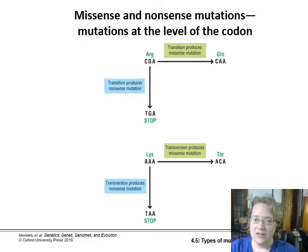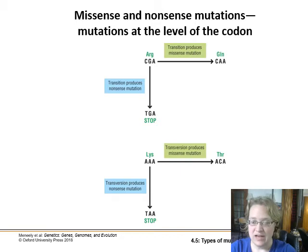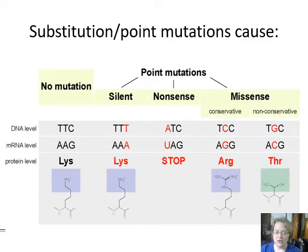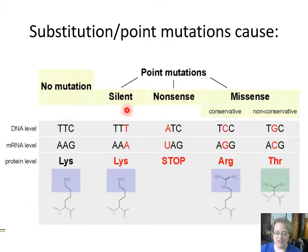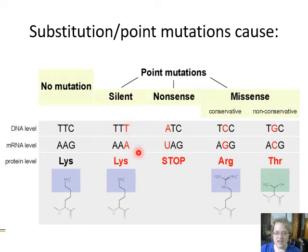At the level of the codon, we can have several outcomes from a point substitution. A silent mutation means the amino acid produced is the same even though there's a change in the DNA — it doesn't actually translate to a change in the amino acid residue. In this case, lysine has multiple codons, so switching them doesn't make any difference to the protein or phenotype.